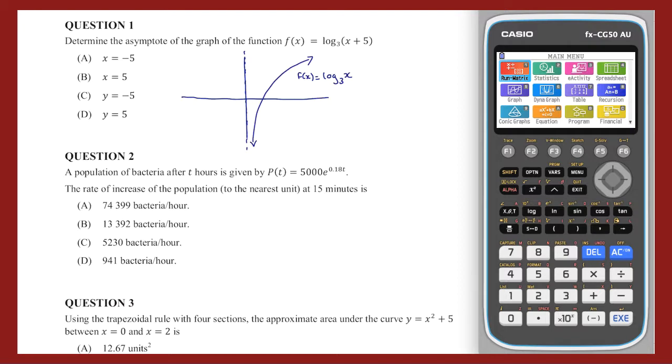The function f(x) equals log base 3 of (x plus 5) is translated 5 units to the left, and so looks something like this. And so its asymptote will be x equals minus 5. And so our answer is A.